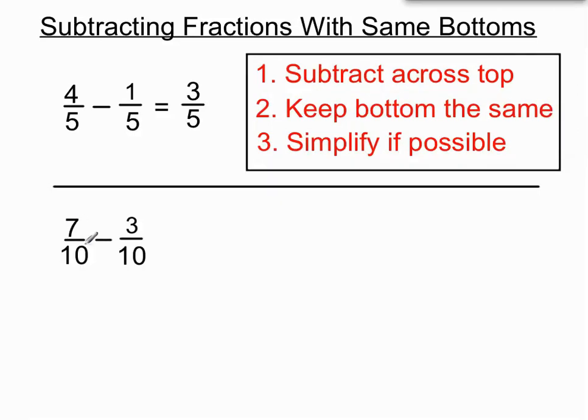Another example. 7 over 10 minus 3 over 10. We've got the same bottoms here so it's going to be one of our easier ones. Subtracting across the top. 7 minus 3 gives us 4 on the top.